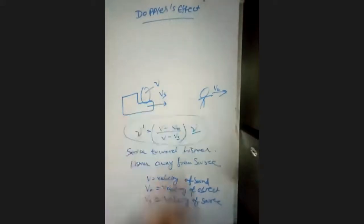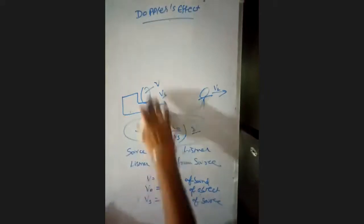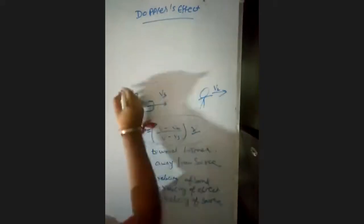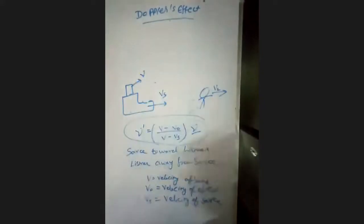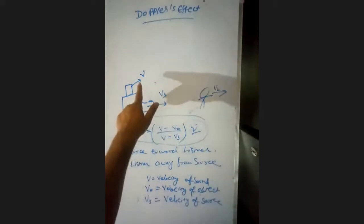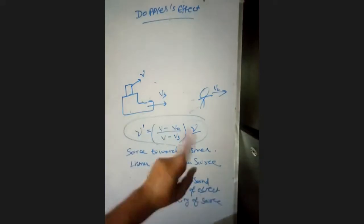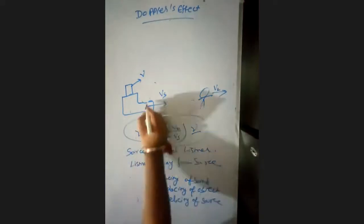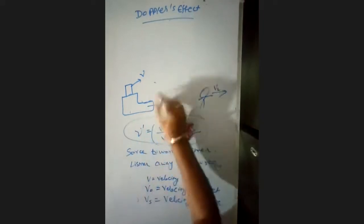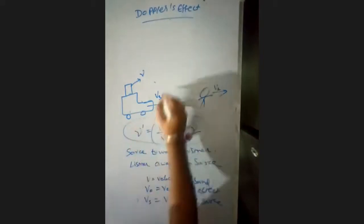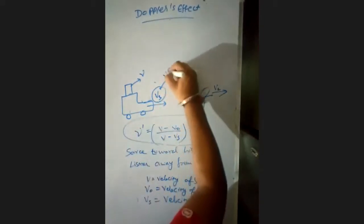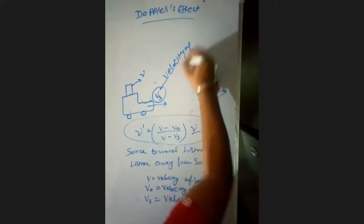We have a Jeep here with a siren on it. This siren is producing sound of frequency ν (nu). The Jeep is moving with velocity Vs. We are talking about this because the Jeep is the source of sound — so Vs is the velocity of the source.